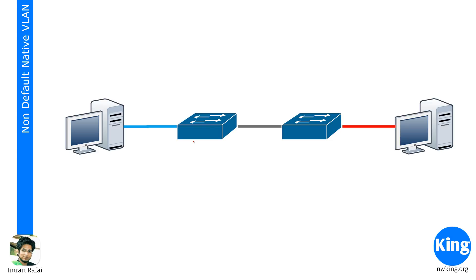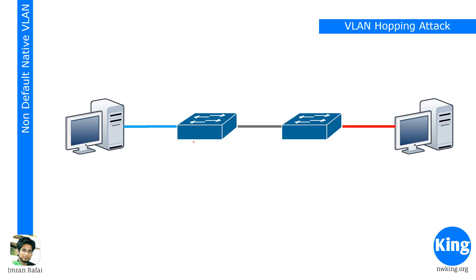The next thing we're going to talk about is non-default native VLAN. VLAN is a topic we discussed many times — we dedicated four videos for VLAN. By default, the native VLAN on a Cisco switch is VLAN 1. That's the default native VLAN. There is a type of attack called a VLAN hopping attack. If you know how switches tag packets — this is VLAN 1 and this is VLAN 10 — the default native VLAN is 1.